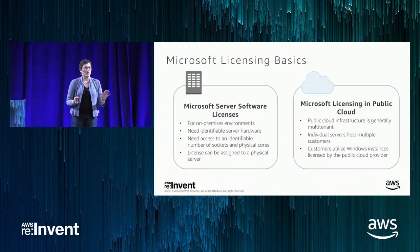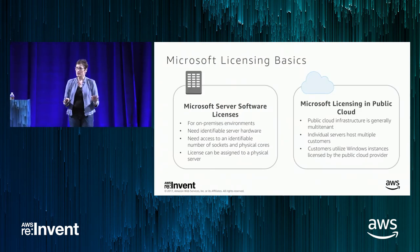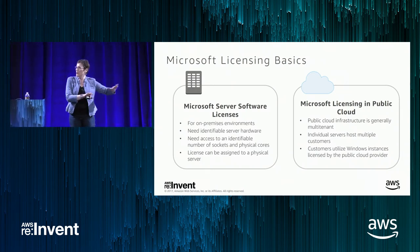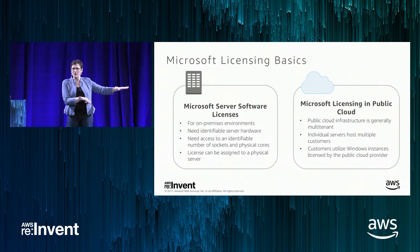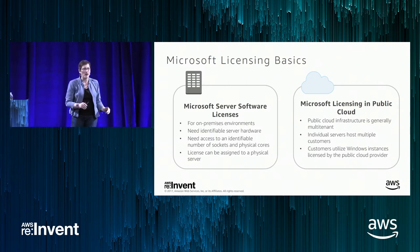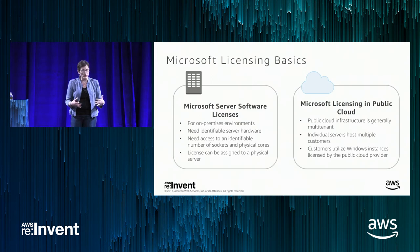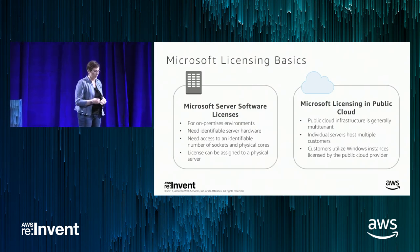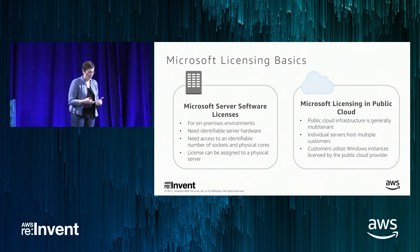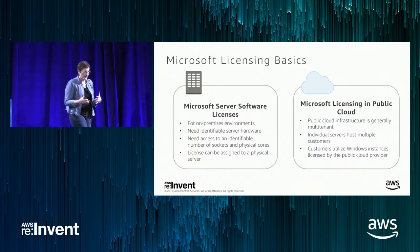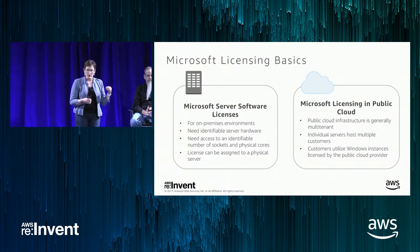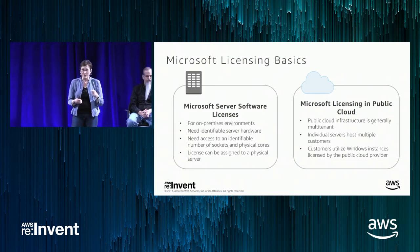I want to cover a little bit of terminology. I'm going to start assuming you don't know a lot — I want to make sure everybody has a common understanding. On-premises, when you license Microsoft applications and operating systems, it's really tied to the server. The licensing is assigned to that physical server, and you really have to know about the sockets or physical cores.